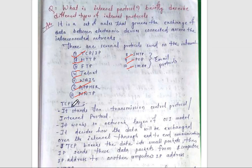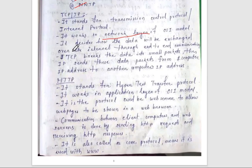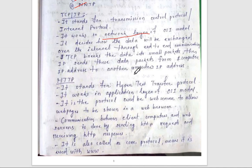TCP/IP stands for Transmission Control Protocol and Internet Protocol. It works on the network layer of the OSI model. It decides how data will be exchanged over the internet through end-to-end communication. TCP breaks the data into small packets, then IP sends these data packets from one computer's IP address to another computer's IP address.